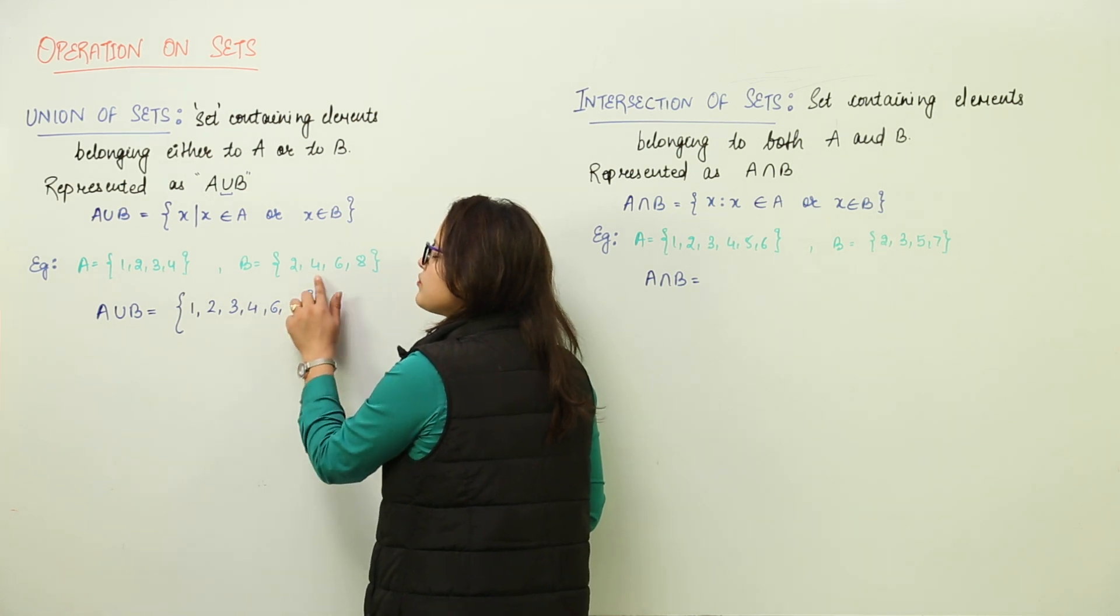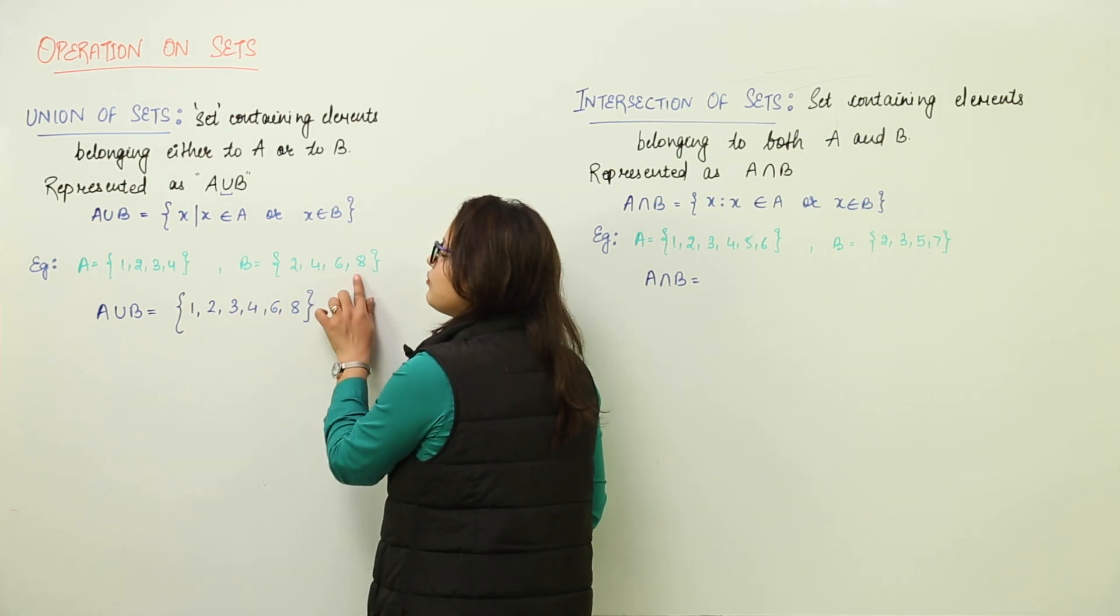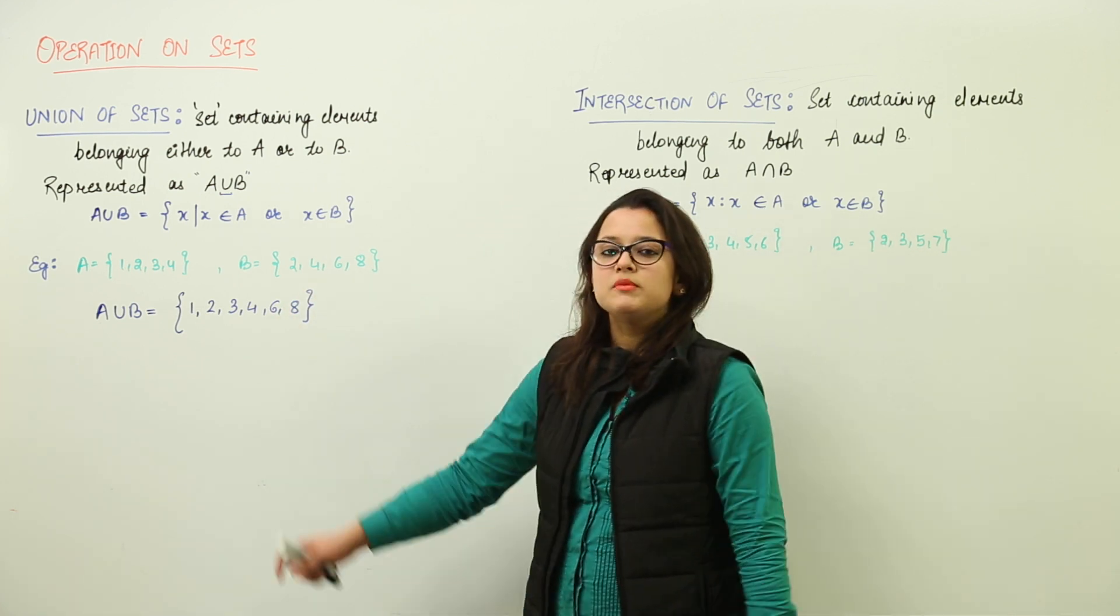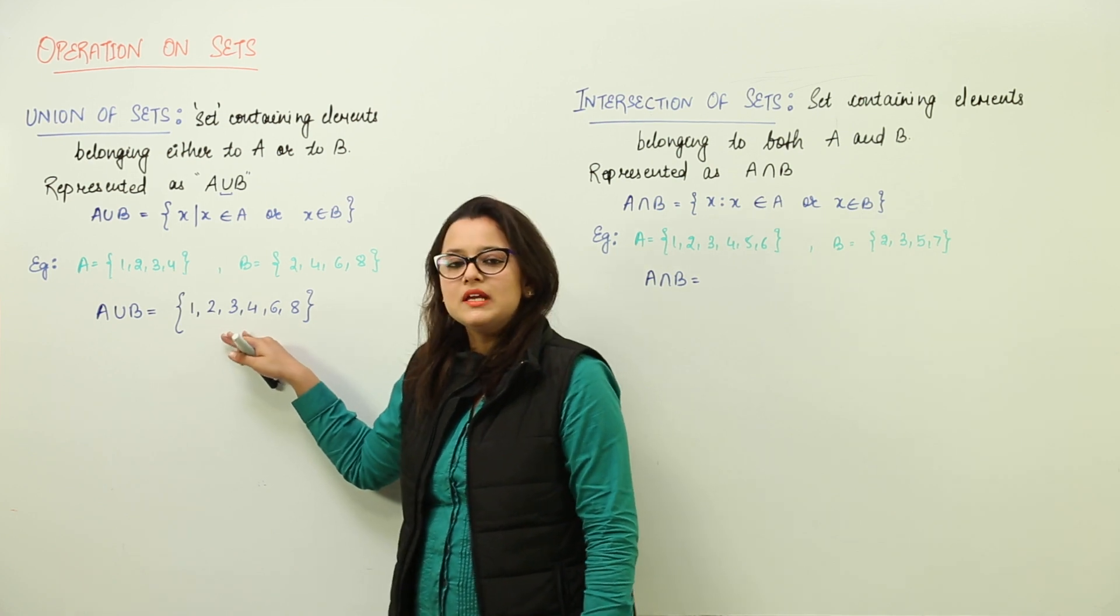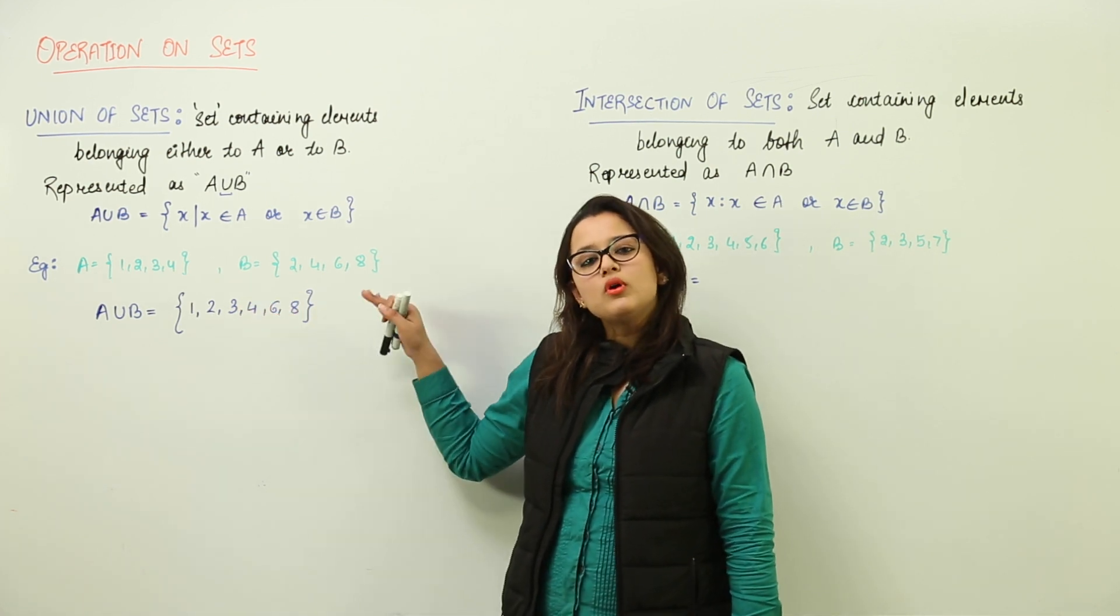6 is an element of B, and 8 is an element of B but not A. That means A union B is a set which has each element either belonging to A or belonging to B.